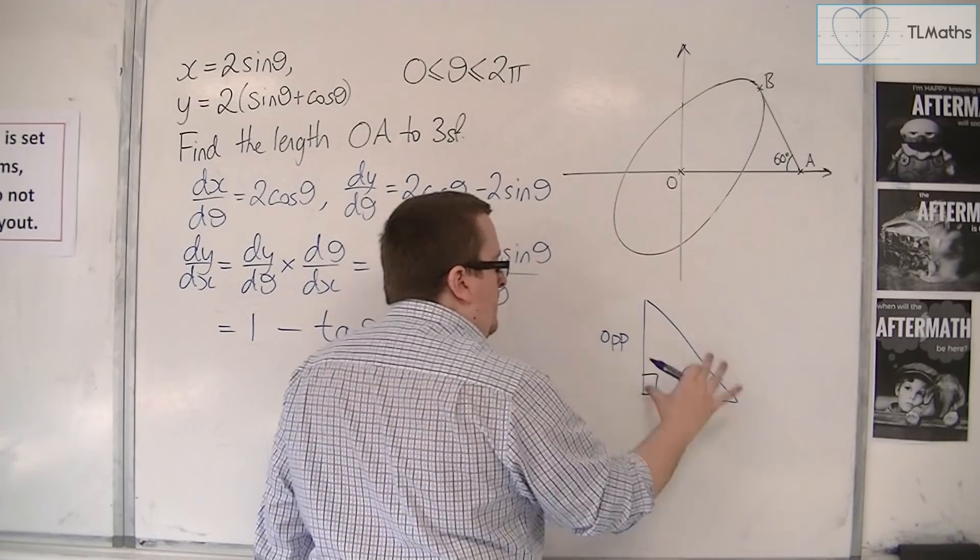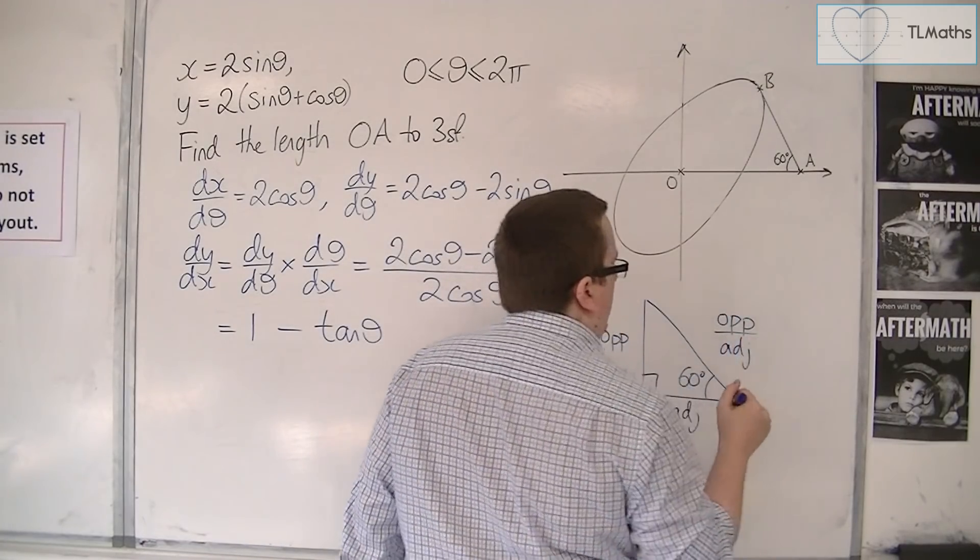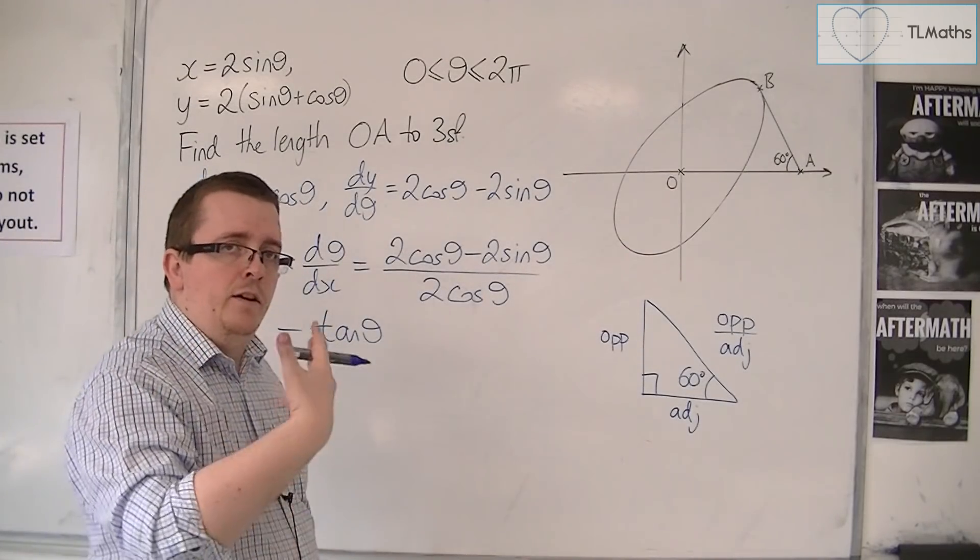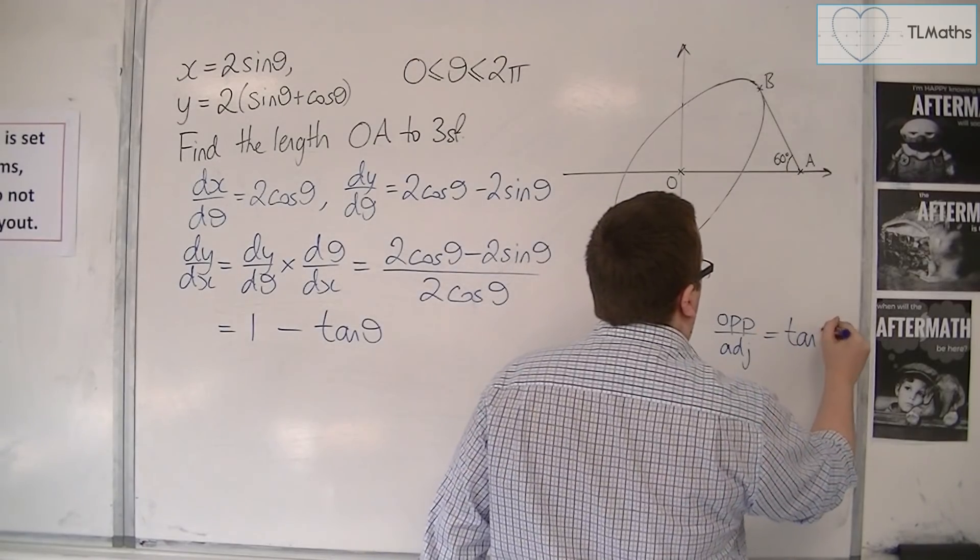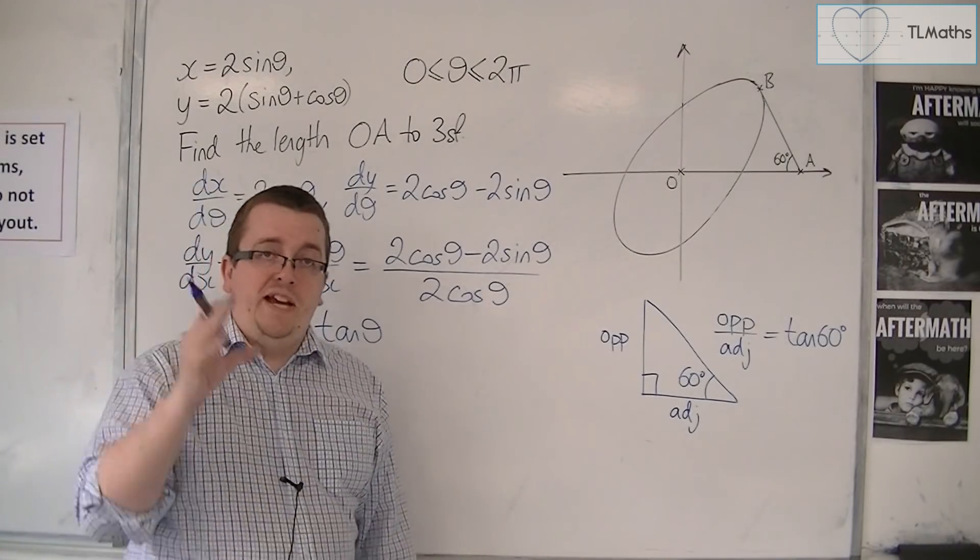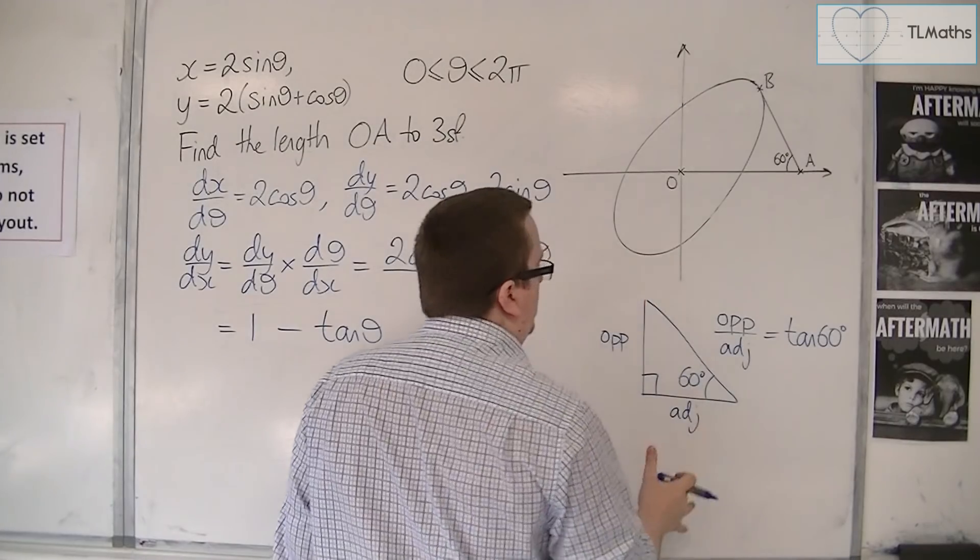That means the difference in y divided by the difference in x is the opposite divided by the adjacent. I know that opposite divided by adjacent, using SOHCAHTOA, is tan of theta. So that is tan of 60 degrees.